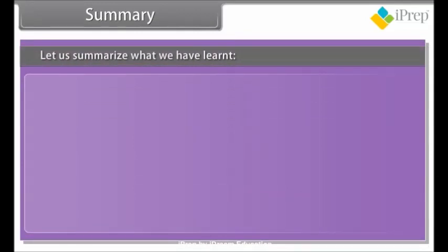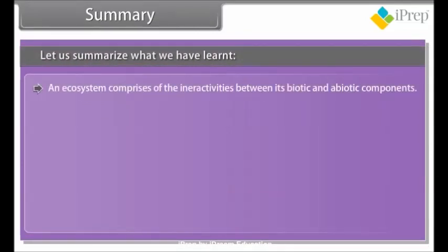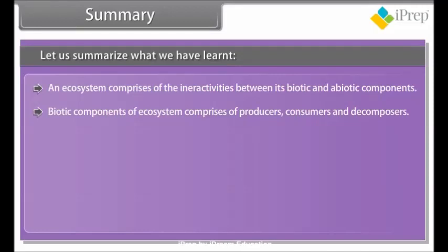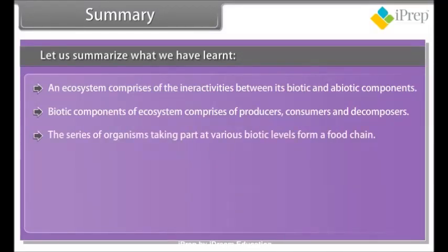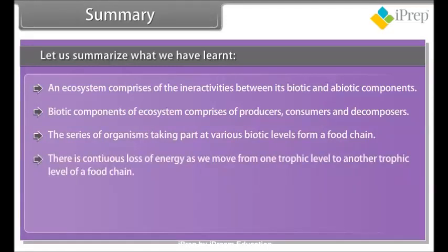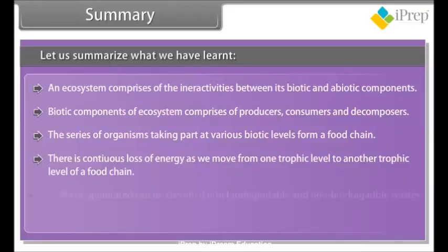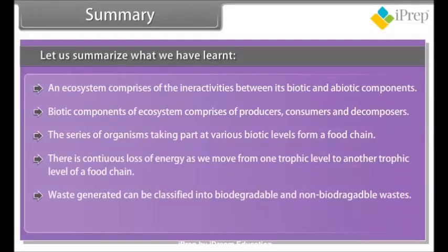An ecosystem comprises the interactions between its biotic and abiotic components. Biotic components consist of producers, consumers, and decomposers. Organisms at various trophic levels form a food chain, with continuous loss of energy as we move from one trophic level to another. Waste can be classified into biodegradable and non-biodegradable types. The use of chemicals like CFCs is causing ozone depletion.